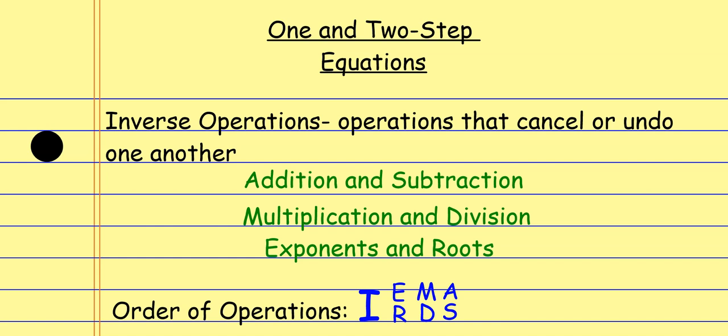Hi there folks. Today we're looking at one and two-step equations. We've kind of looked at equations before using some mental math to figure out what the variable represents. Now we're going to go more official with it and start to really break down the process and undo the process by using these things called inverse operations.